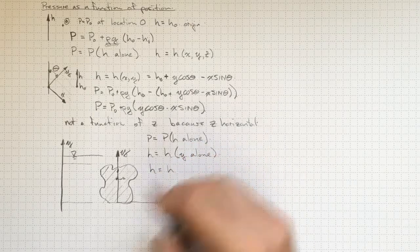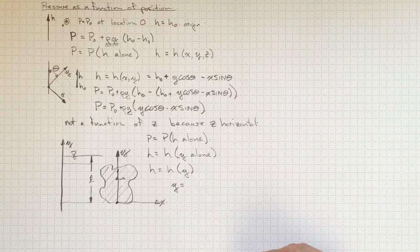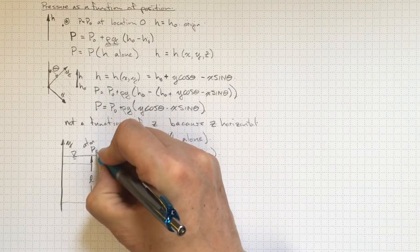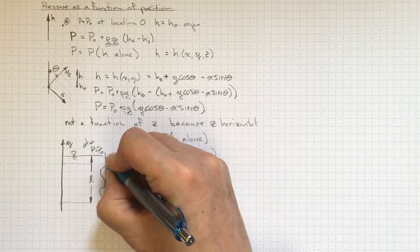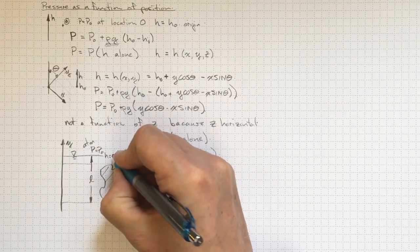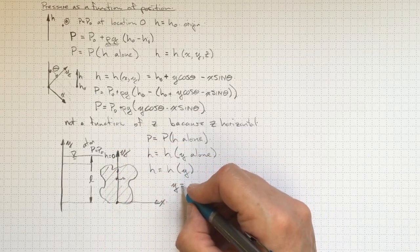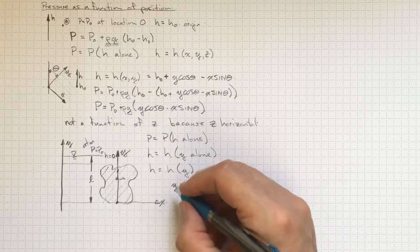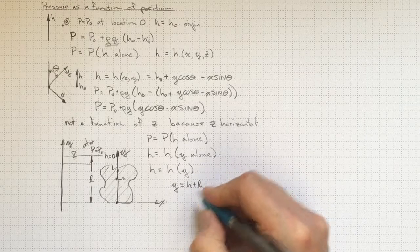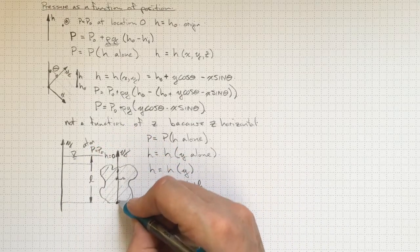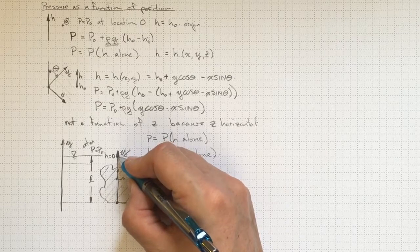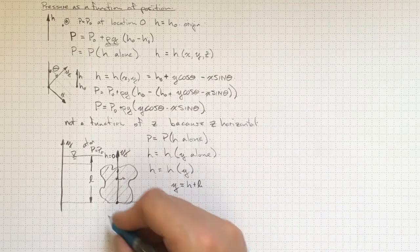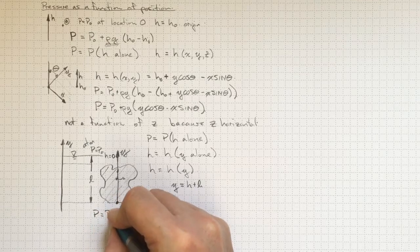So where do we know what the pressure is? Well, we know that this is atmosphere above the surface of the water, where p is equal to p0 at atmosphere. So let's make that h equal to 0, because that's going to be easy. If that's h equal to 0, then we can get the relationship between y, h, and l. So y is going to be h plus l, because starting down here at the bottom, by the time we get up to here, y is equal to l.